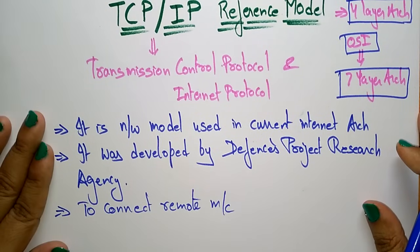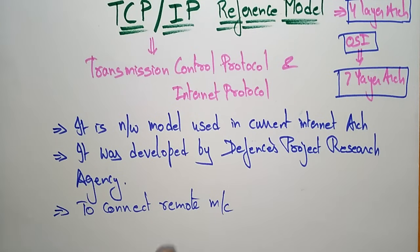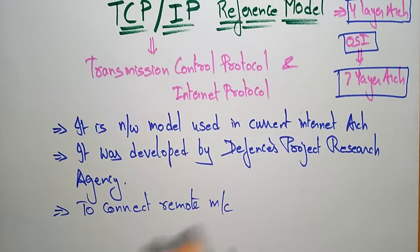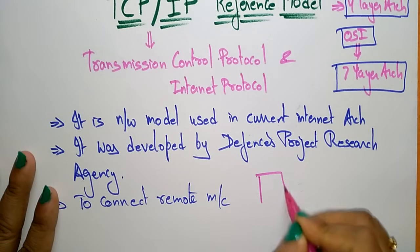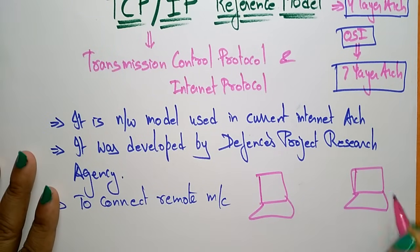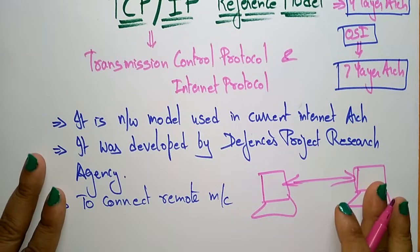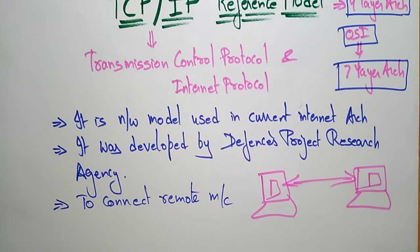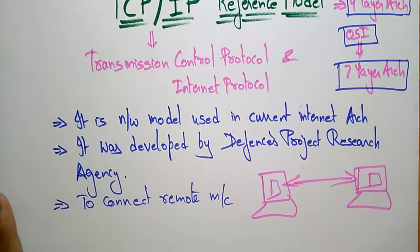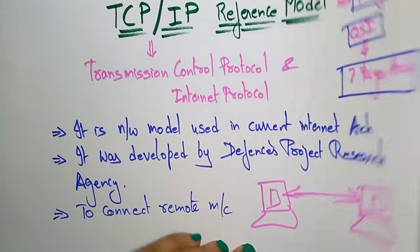The main idea of TCP/IP was to allow one application on one computer to send data packets or to talk to another application running on a different computer. To transmit data from one system to another system, we use this TCP/IP reference model.